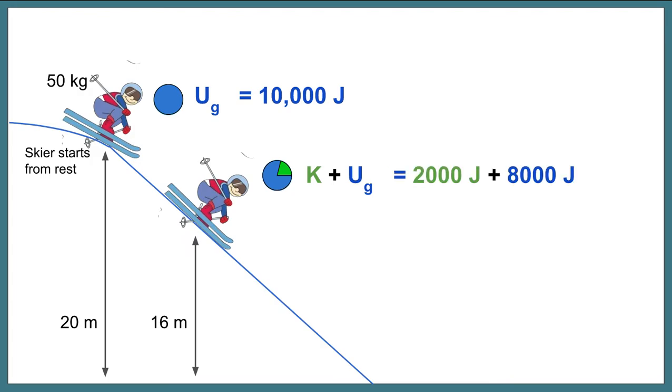If we knew that there were 8,000 joules of potential energy by taking 16 meters times the mass times little g, we would know then also that there was 2,000 joules of kinetic energy. The total amount, 10,000 joules, would have to stay the same. And this is how we're eventually going to work in some calculations.